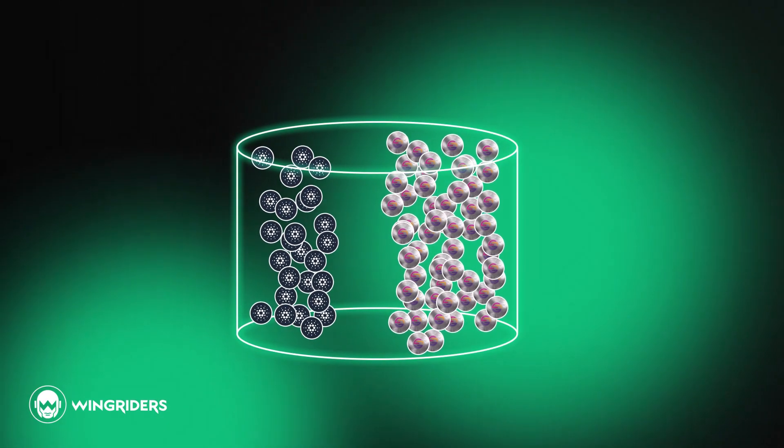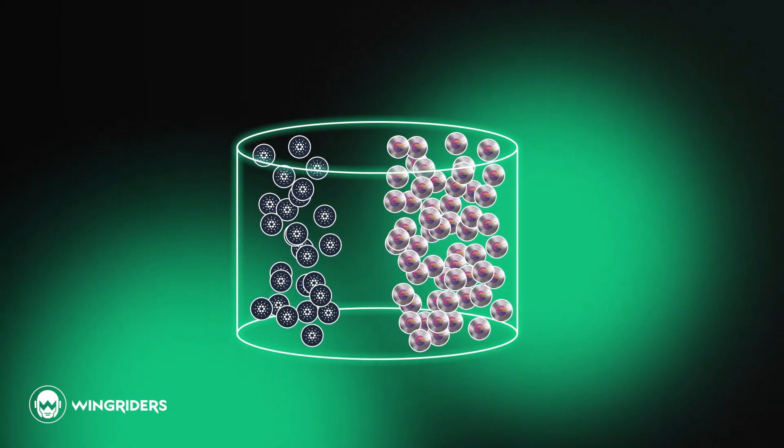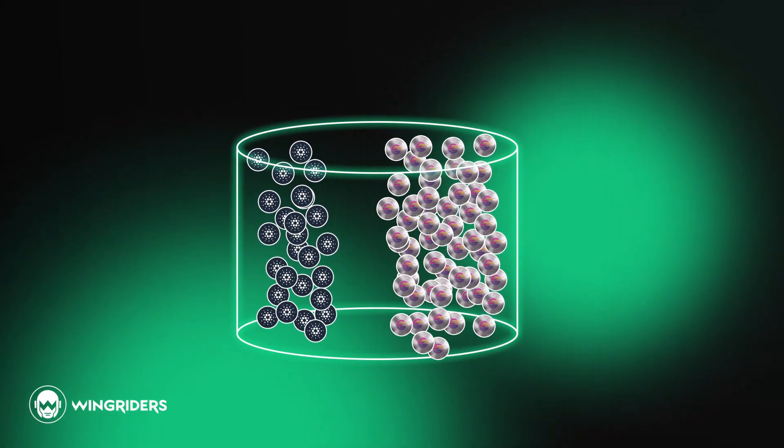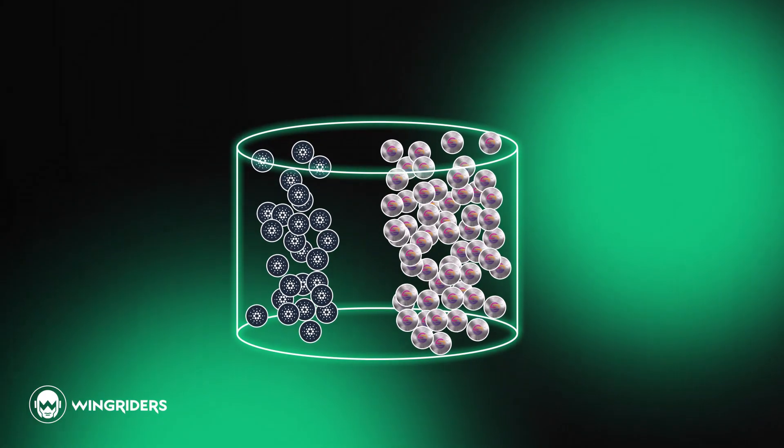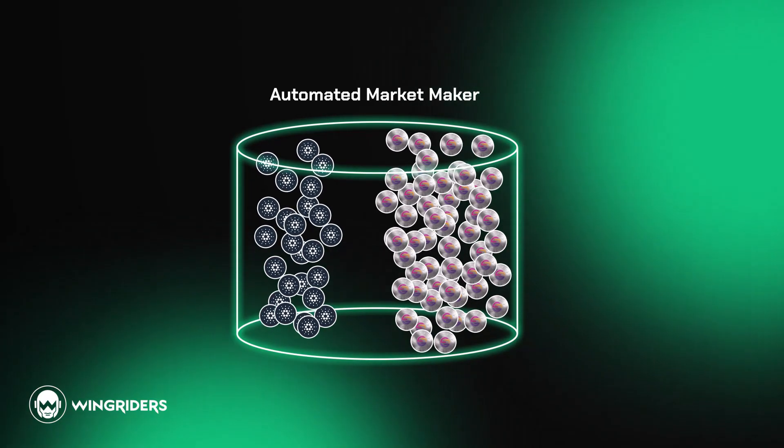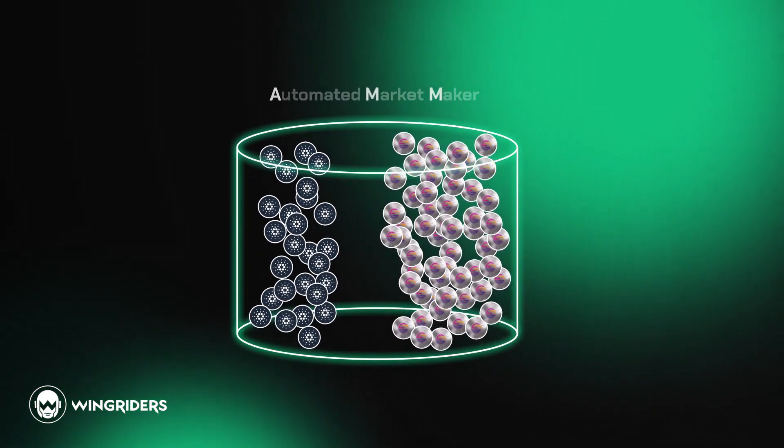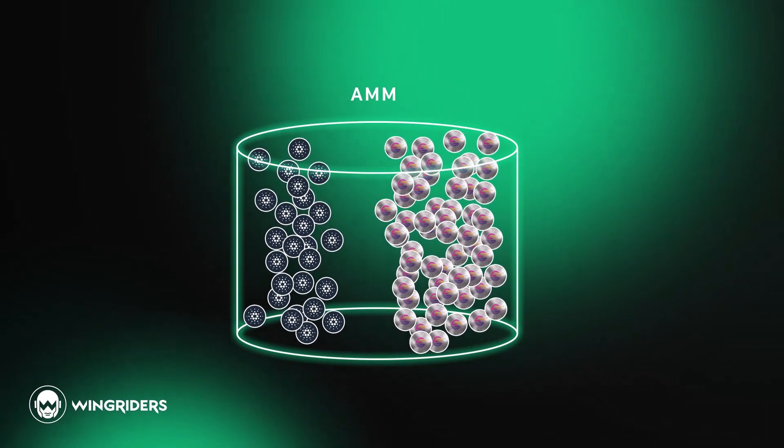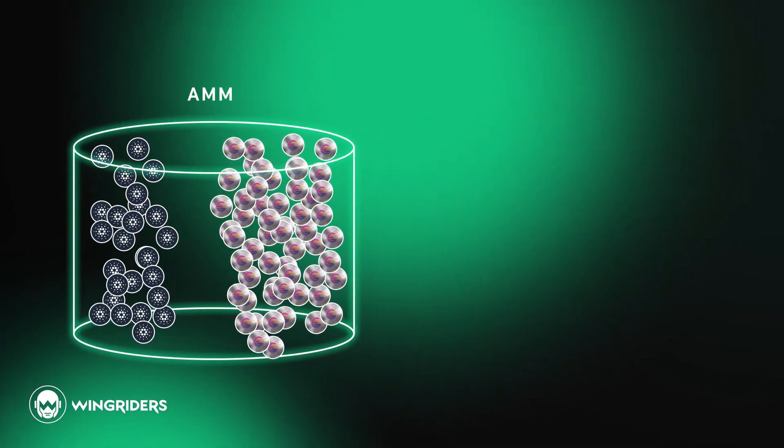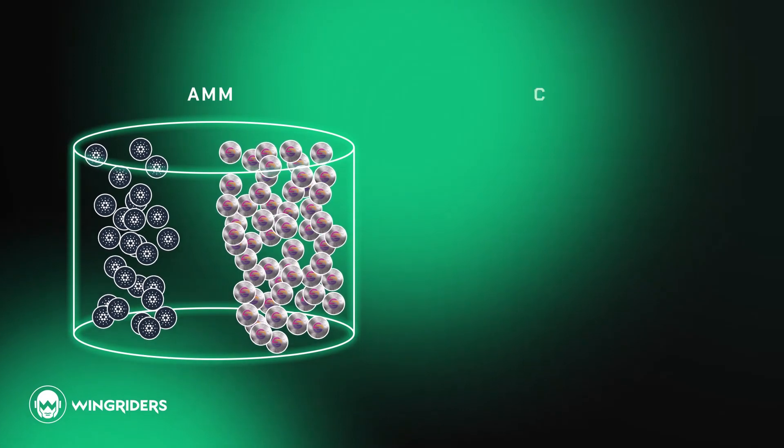A liquidity pool determines the price of its assets from the assets ratio in the pool. Most liquidity pools use the automated market maker model to know the current prices of the assets in the pool. Automated market maker requires the product of the assets to remain constant by this simple formula.